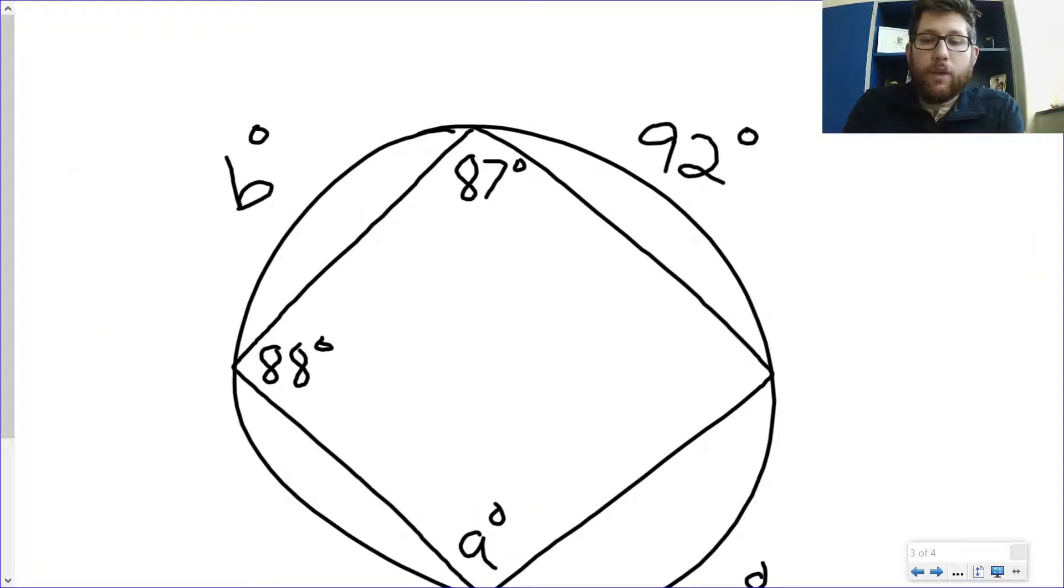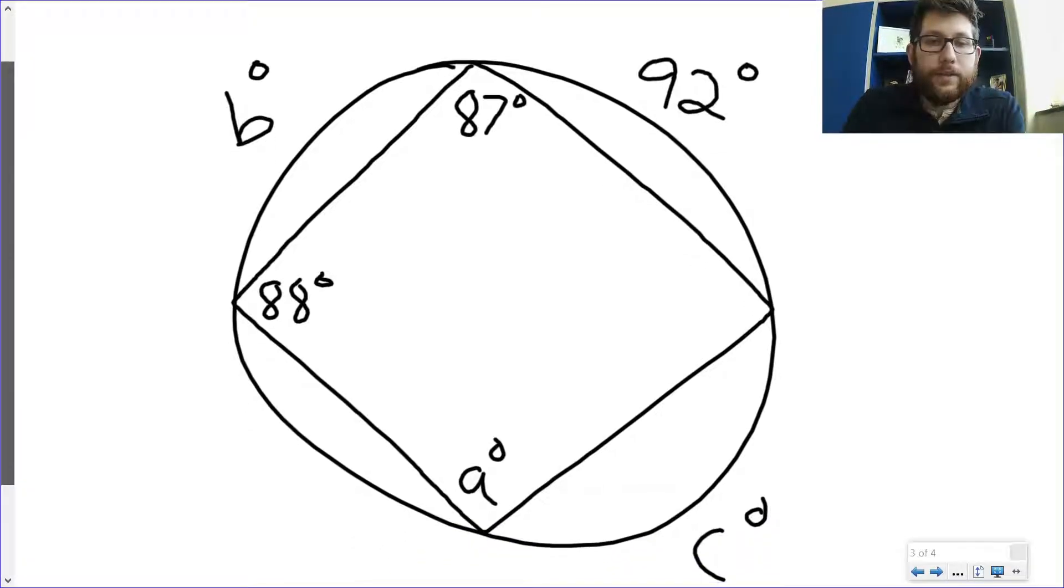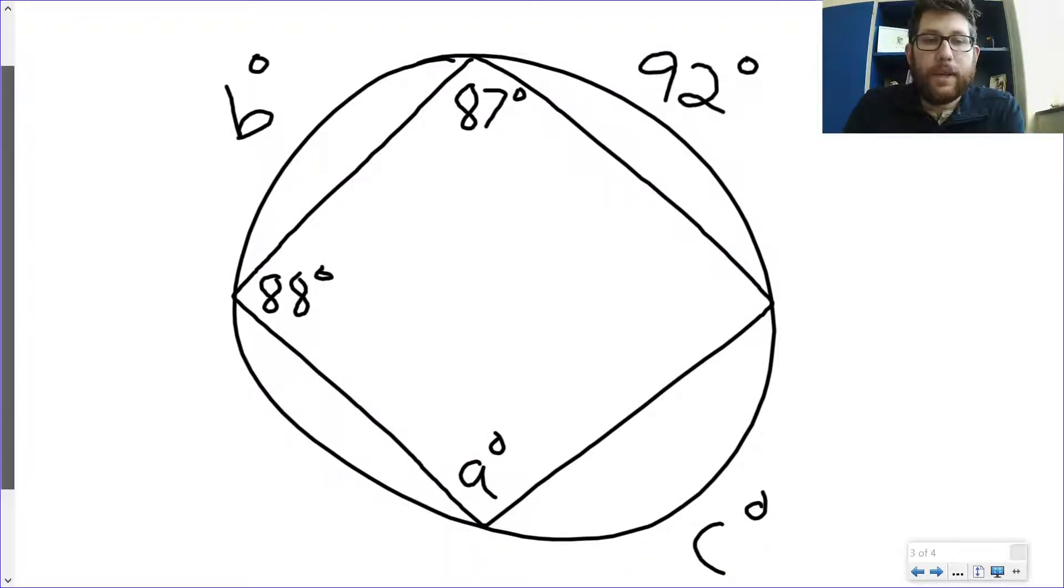All right, let's look at one of these inscribed quadrilateral guys. Let's solve for a, b, and c. So a is pretty easy. I've got this 87 up here. So what I'm going to do is do 180 minus 87. So a is equal to 93 degrees.